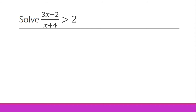We want to move the 2 from the right side so that we can have zero on the right side. Moving it to the left side, we have (3x − 2)/(x + 4) − 2 > 0. As you can see, the right side is now zero, but the left side is not yet a single term, so we need to make it into a single term.